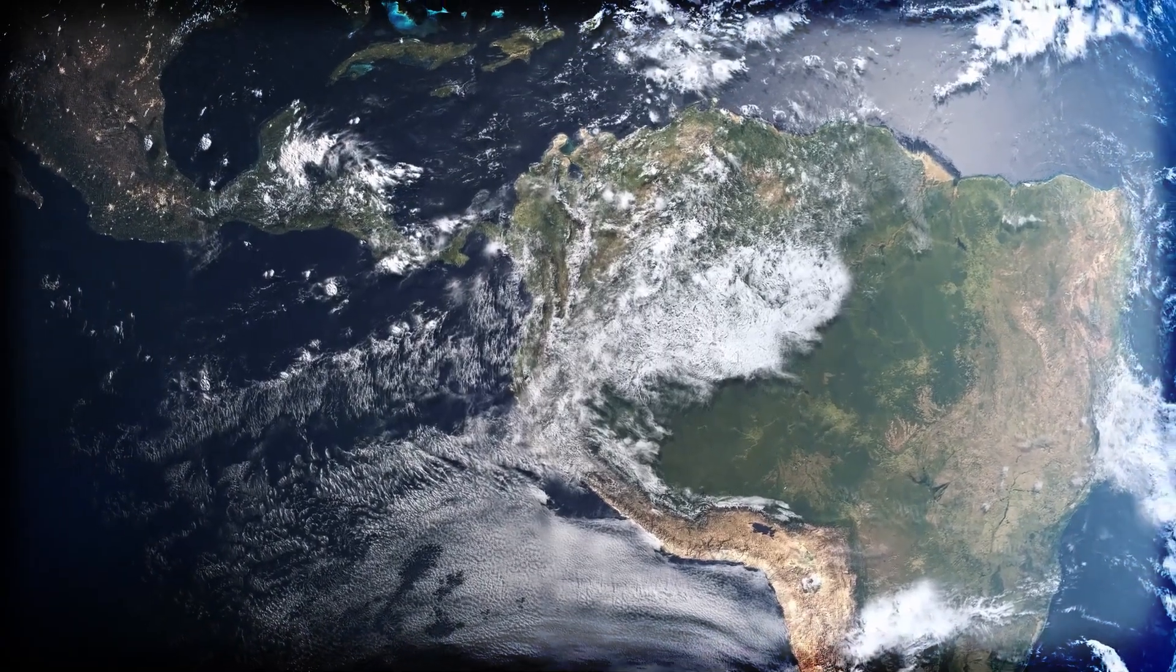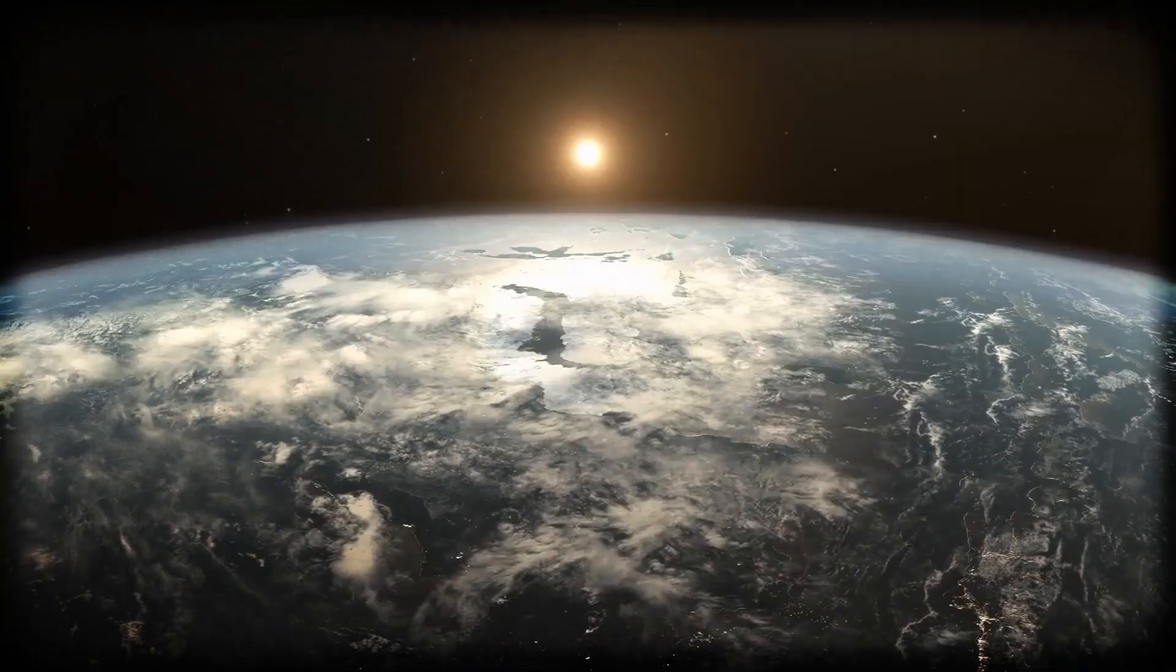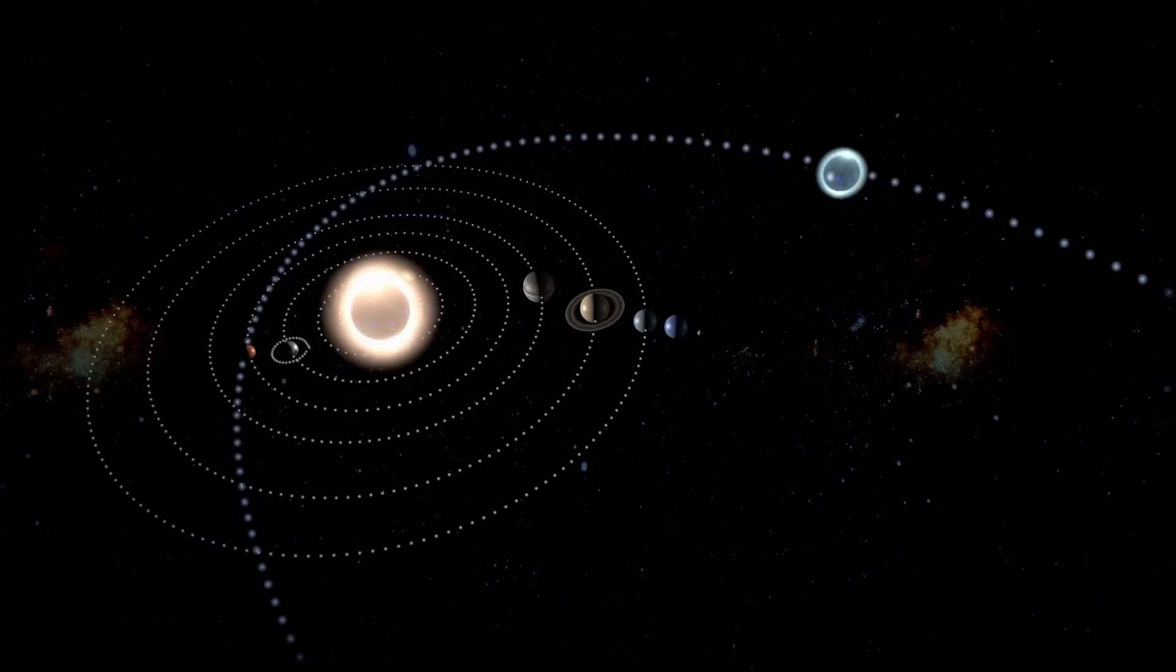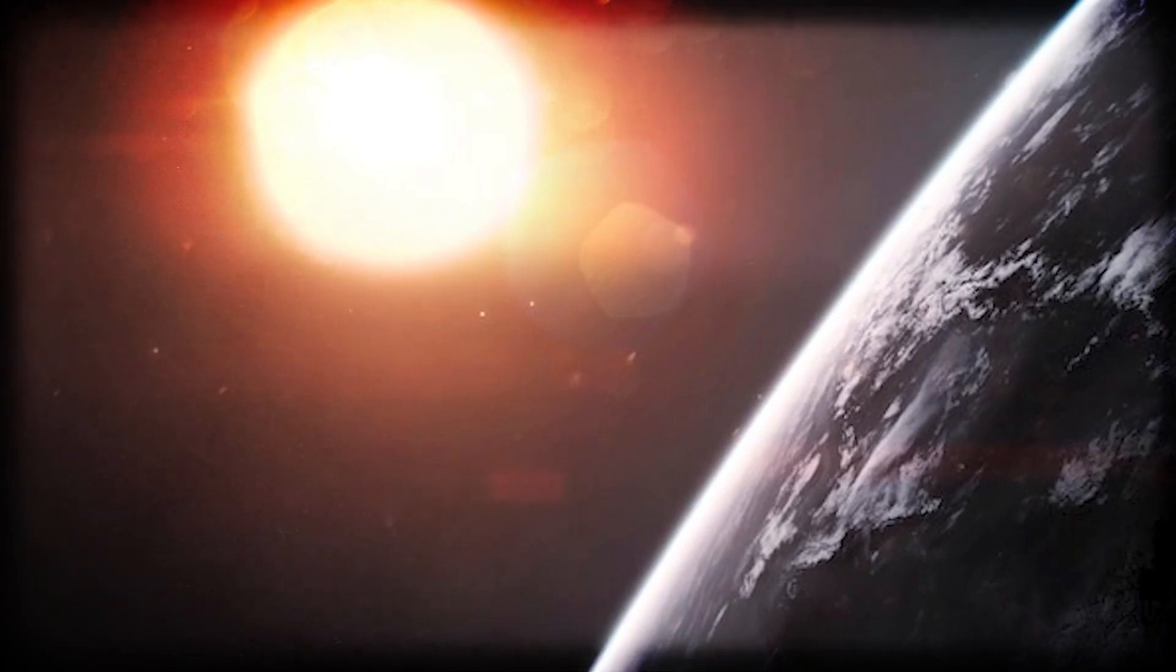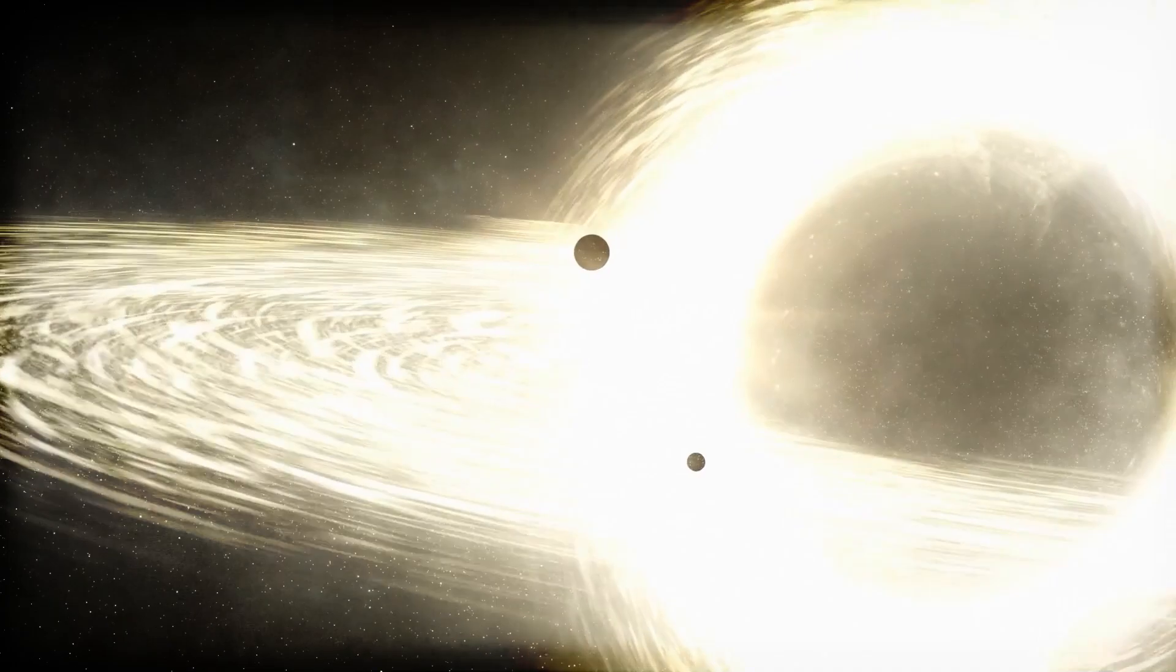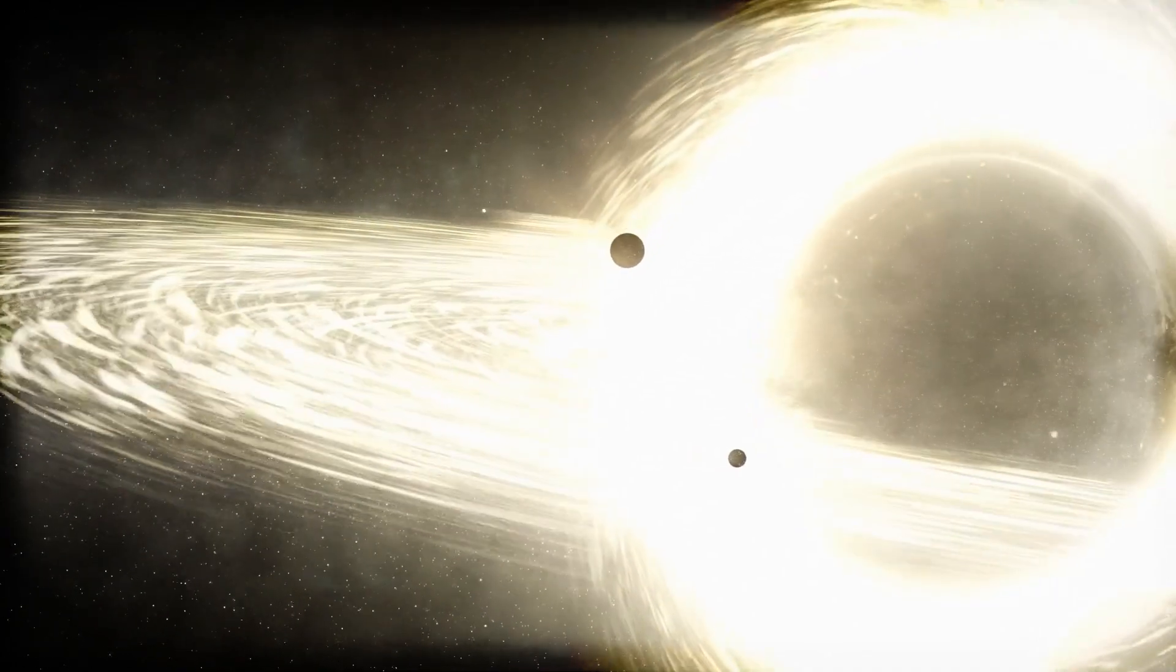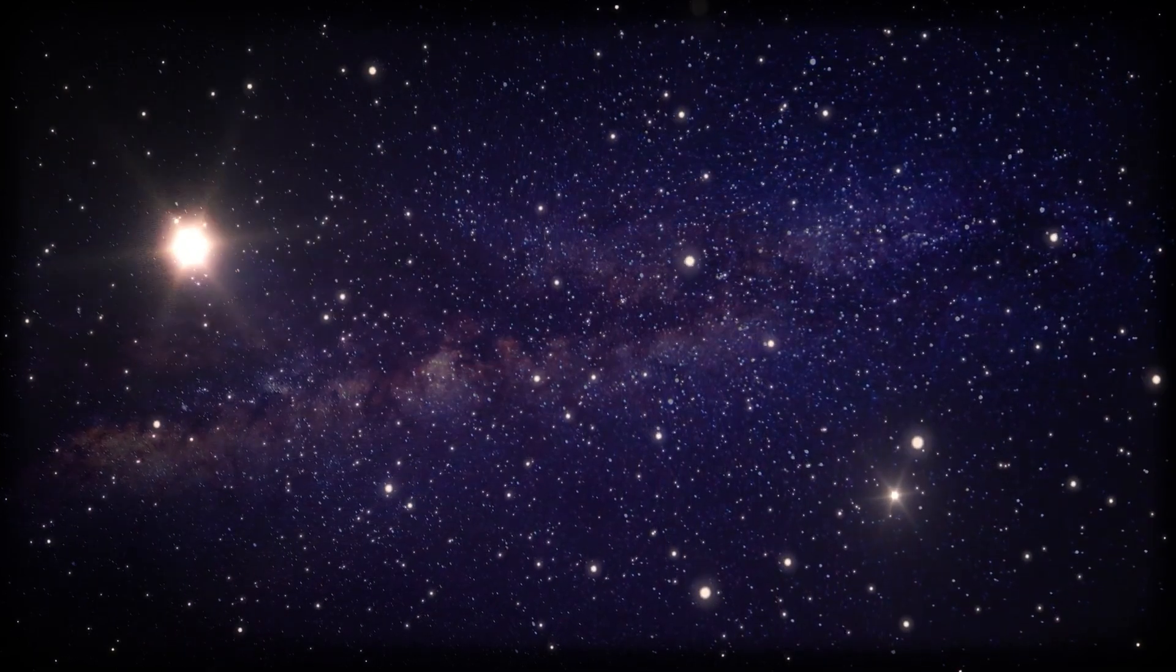But here's the thing: catching a transit like that is really tough. Take Earth, for example. If you were watching our solar system from far away, Earth's pass in front of the Sun would cause the sunlight to dim by just 0.008%. That's almost nothing. Yet Kepler was sensitive enough to spot even those tiny changes in starlight over and over again.